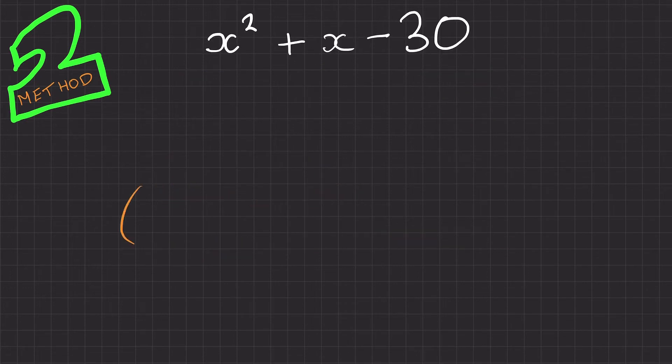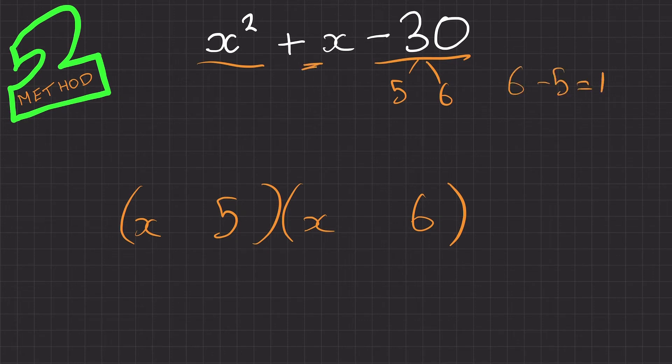Second one, I'm going to write out the brackets first actually. So x squared is x times x minus 30. We've got 5 and 6. Multiply to get 30. We've got 5 and 6. And we need to figure out which one's positive, which one's negative. Well, 6 take away 5 equals 1. It's therefore 6 and minus 5. So plus 6, minus 5. And there's a final answer.